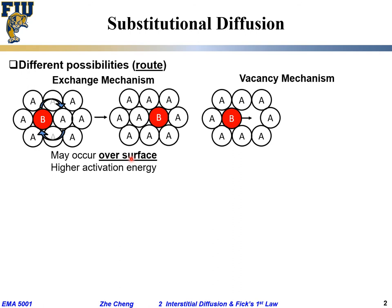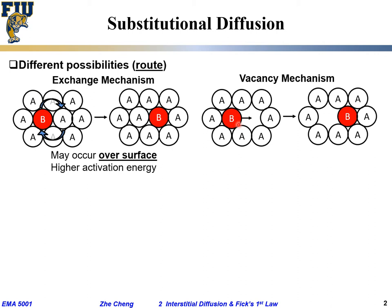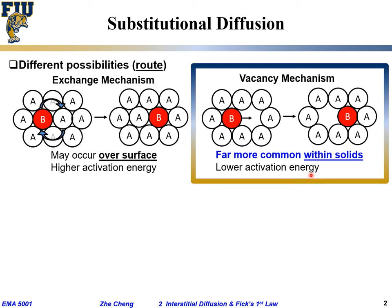Another mechanism route is by the vacancy mechanism. Vacancy means a missing atom. If we have A and B atoms together and the B sits nearby, at any moment there may be a missing atom — a vacancy — near A. Naturally, by just probability, the B atom goes to the neighboring vacant position. This is way more common. It happens within the solid and needs much lower activation energy compared with the exchange mechanism. This is the predominant way for so-called substitutional diffusion.